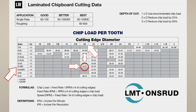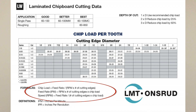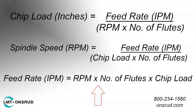The recommended chip load range for this tool is 0.019 on the low end and 0.021 on the high end. Located below the chart, you'll notice three different formulas, and we will be using the feed rate formula to calculate the proper feed rate for this tool. The feed rate formula reads: feed rate equals RPM, which is the spindle speed of the machine, times the number of flutes, times the chip load.